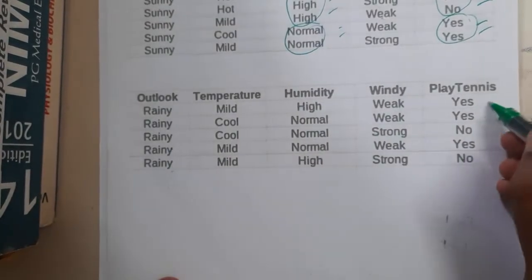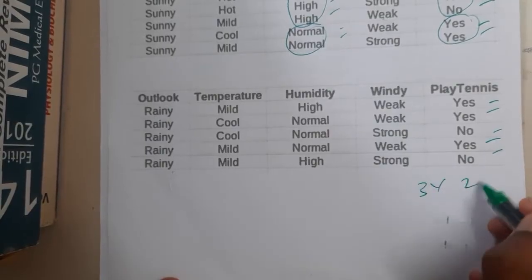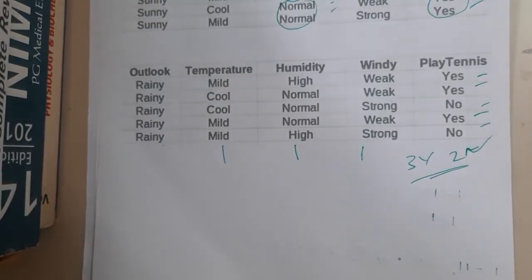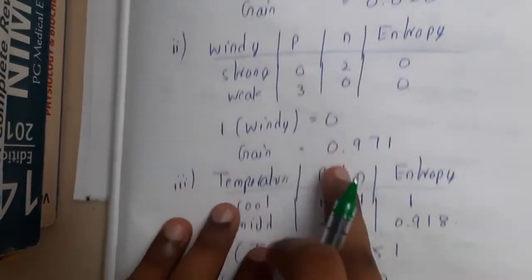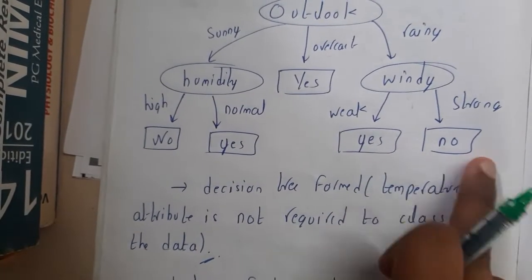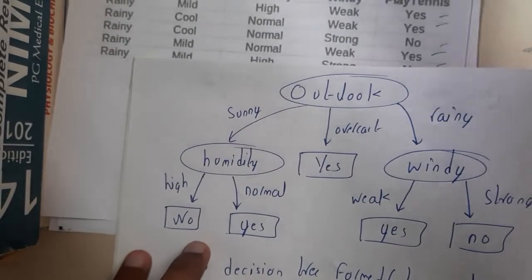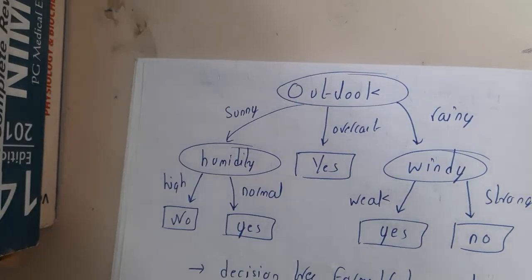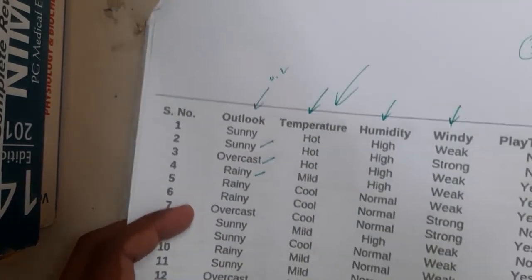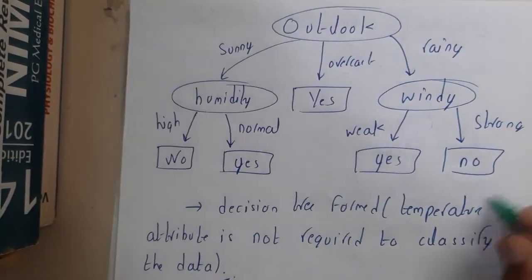Now continue with rainy. For the rainy sub-table, there are three yes's and two no's. Calculate the entropy — approximately 0.971. Continue the same process for the three remaining columns. Once you get the gains, check which is maximum. Windy has the maximum value for the rainy branch. So you write windy with yes or no outcomes. Notably, the temperature column is never used in the final tree.